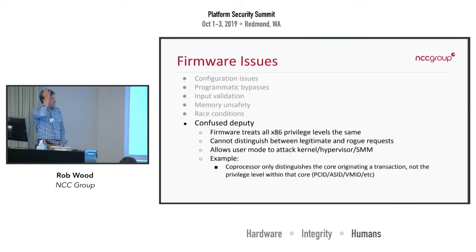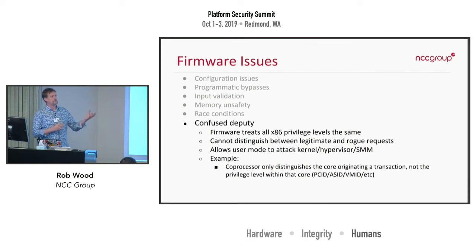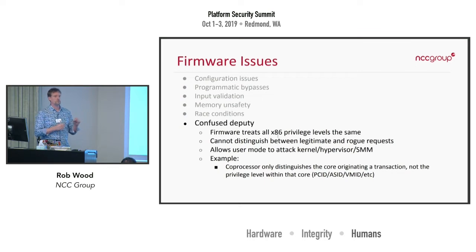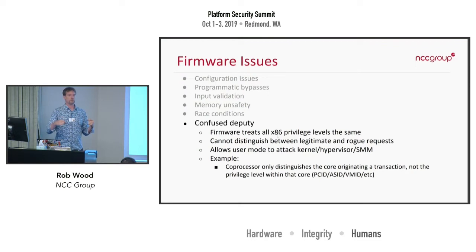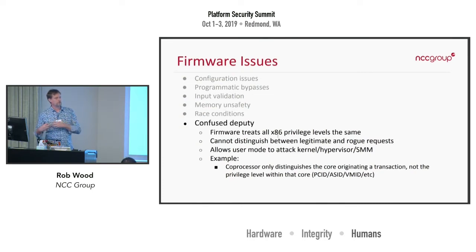The confused deputy problem is best illustrated by example. Say you've got some coprocessor doing operations on behalf of the x86. It verifies that the memory address range passed in is owned by the x86 and says fine, I'll do this operation. But it doesn't check that it was this particular guest VM that owns that memory. So a user-mode program on the x86 could ask the coprocessor to override kernel memory, SMM, or hypervisor memory. We've seen a number of issues where those sorts of protections aren't extended to these other coprocessors.